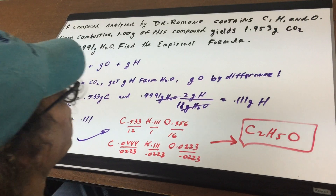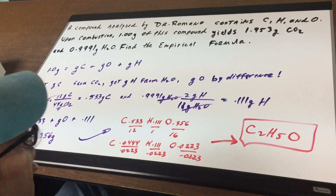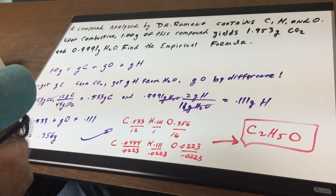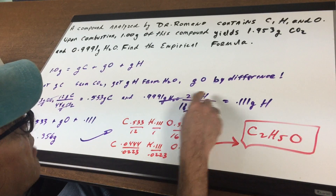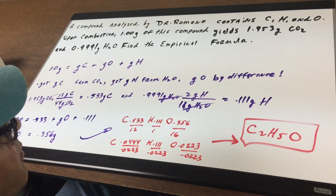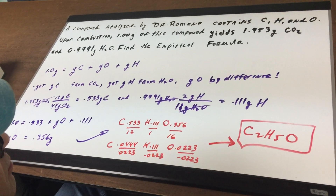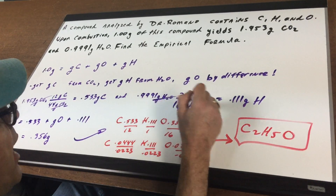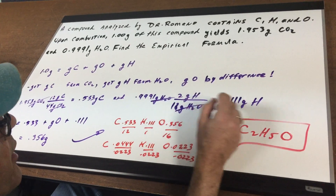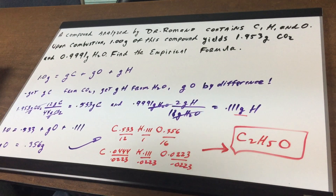Likewise, I go to the water: 0.9991 grams of water. There are 2 grams of hydrogen in 18 grams of water. Crossing out the grams of water gives me the grams of hydrogen.